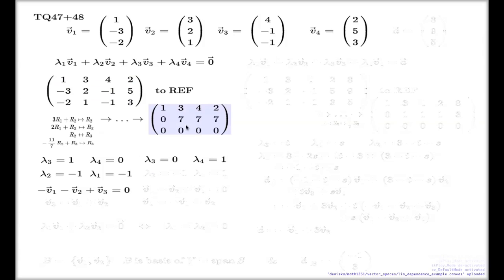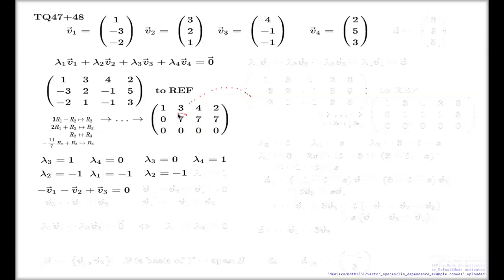Solving this: from the second row of the row echelon form, λ2 = -1 again. From the first row, λ1 = 1 — it comes out as positive three, nothing from λ3, and minus two from λ4, giving λ1 = 1. So the four values are λ1 = 1, λ2 = -1, λ3 = 0, λ4 = 1.